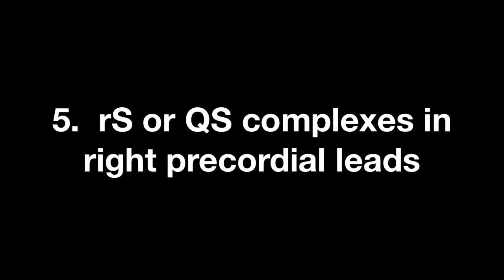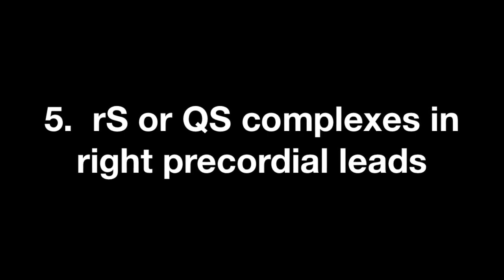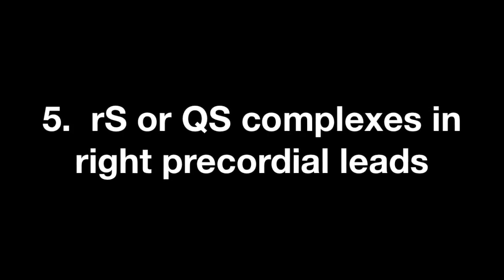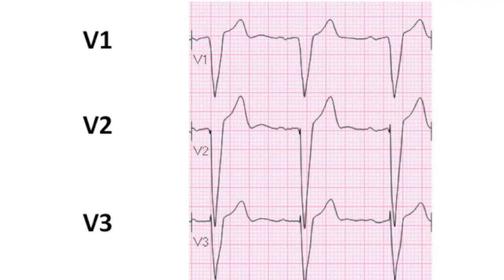The final criteria for the ECG diagnosis of left bundle branch block are the presence of RS or QS complexes in right precordial leads. You will see these in leads V1, V2, and V3. In lead V1, you have a broad QS complex. In V2, depending on the beat, you have a QS or an RS complex. And then finally in V3, you have an RS complex.